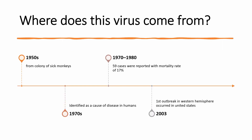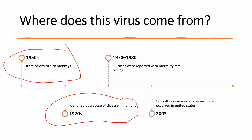According to the CDC, the virus was identified in the 1950s from a colony of sick monkeys. In 1970, monkeypox was identified as a cause of disease in humans in the Democratic Republic of Congo. Between 1970 and 1980, 59 cases were reported with a mortality rate of 17%, all in the rainforests of Western and Central Africa. Cases were linked to individuals exposed to small forest animals like rodents, squirrels, and monkeys.